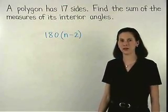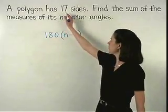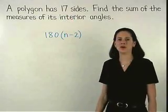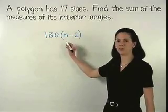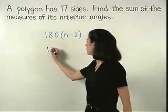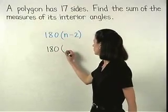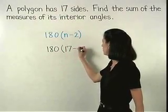So here, since our polygon has 17 sides, we can plug a 17 in for the n in our formula, and we have 180 times 17 minus 2.